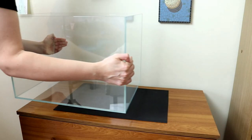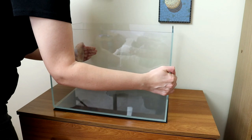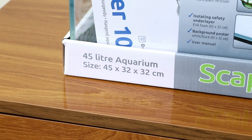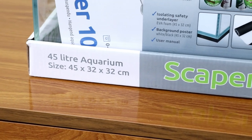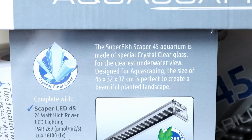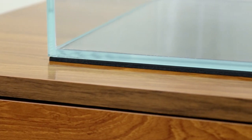First of all let's take a look at what you get for your money. The Scaper 45 tank itself is a standard oblong lidless glass box measuring 45 x 32 x 32 cm. It's made from what Superfish describe as an ultra clear glass. It's not opti-white, so it's still got that slight greenish hue to it, but it's somewhere between opti-white and normal glass.